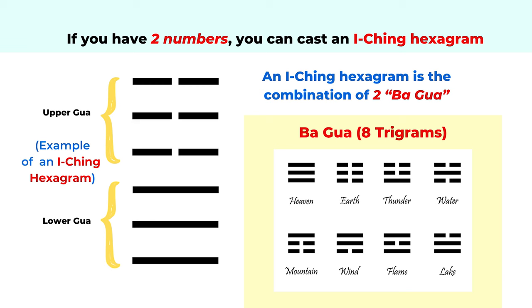For example, the first trigram with three solid lines is called heaven. The symbol of three broken lines is related to earth, because it's all yin energy — the female energy. And then we have thunder, water, mountain, wind, fire, and lake. So it's the combination of these ba gua that becomes the Yi Jing hexagram.